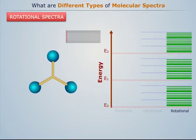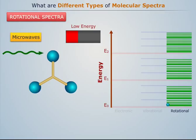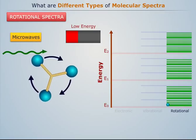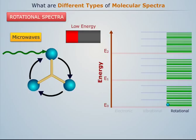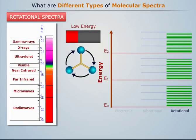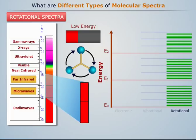Rotational spectra is obtained if the energy absorbed by the molecules is so low that it can cause transition only from one rotational level to another within the same vibrational level. Rotational spectra is observed in the far infrared or microwave spectral region whose energies are exceedingly small. Therefore, it is also known as microwave spectra.